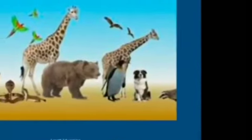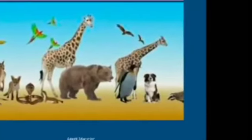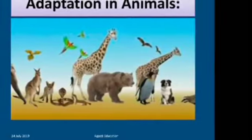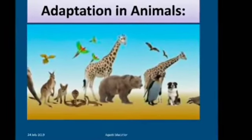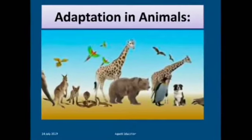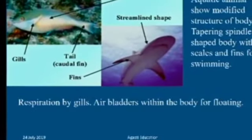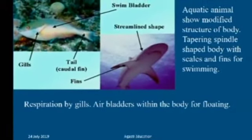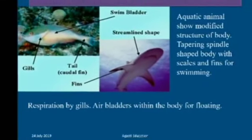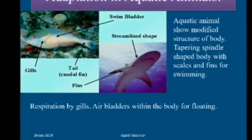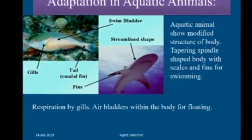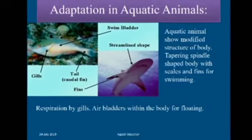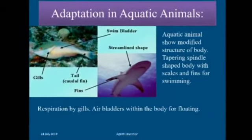Now we are going to see classification of animals. There are many animals around us. Let us see how to classify them. Adaptation in aquatic animals: aquatic animals show modification in the structure of the body — tapering spindle-shaped body with scales and fins for swimming, respiration by gills, and air bladders within the body for floating.